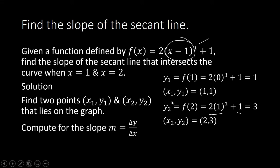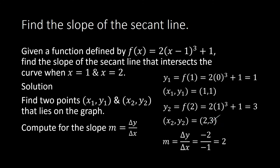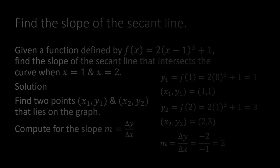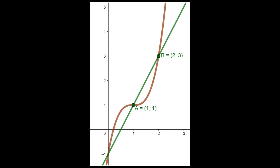We can now compute the slope of the secant line. It's change in y over change in x. So 1 minus 3 over 1 minus 2, which is negative 2 divided by negative 1, equal to 2. The slope of the secant line that intersects the graph of our function when x is equal to 1 and x is equal to 2 is equal to 2. And this is the graph of our function, and that is the secant line.